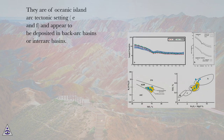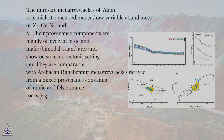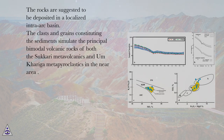The intra-arc metagraywackes of ALAM volcanoclastic metasediments show variable abundances of Zr, Cr, Nb, and V. Their provenance components are mainly evolved felsic and mafic (bimodal) island arcs, showing oceanic arc tectonic setting (E). They are comparable with Archaean Rain-Binner metagraywackes derived from a mixed provenance of mafic and felsic source rocks. The rocks are suggested to have been deposited in a localized intra-arc basin, with clasts and grains simulating the principal bimodal volcanic rocks of both Sukari meta-volcanics and Amkariga meta-pyroclastics in the near area.